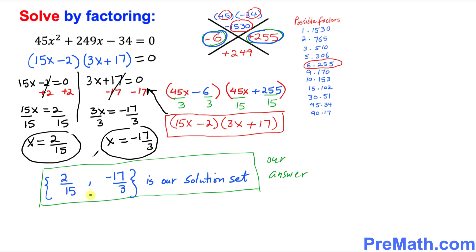Thus, 2 over 15 and negative 17 over 3 is our solution set. And that is our answer.